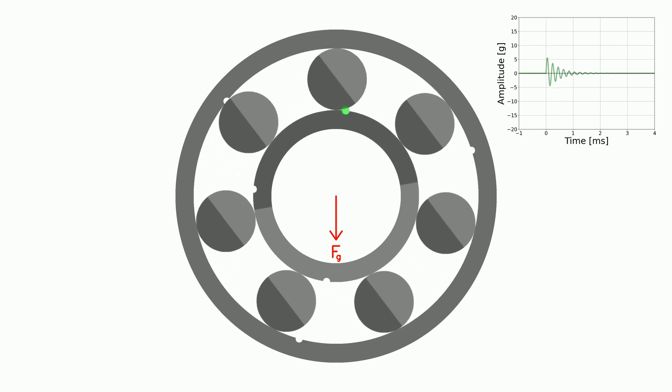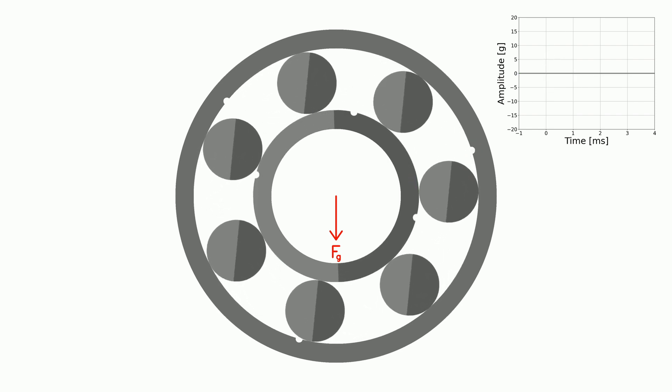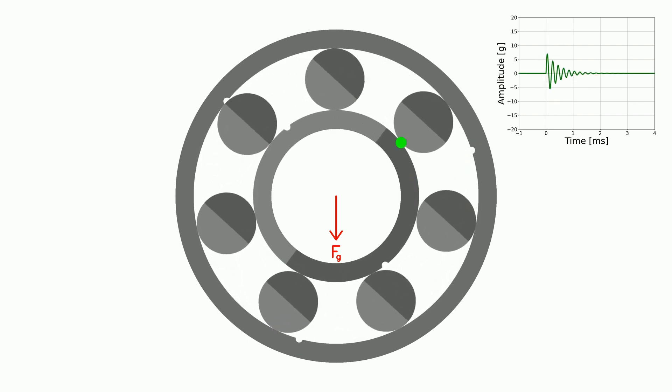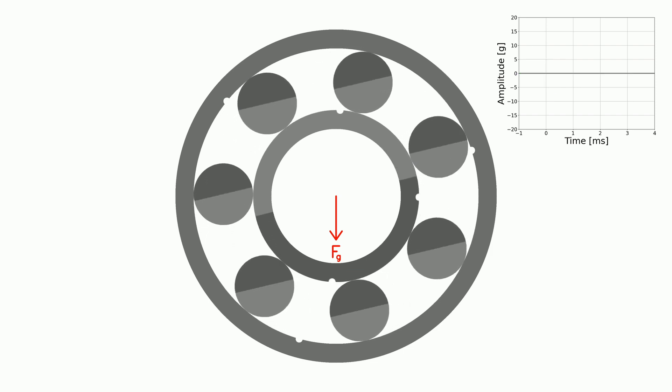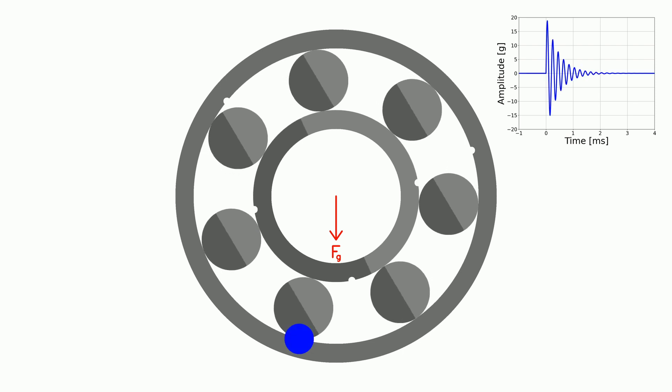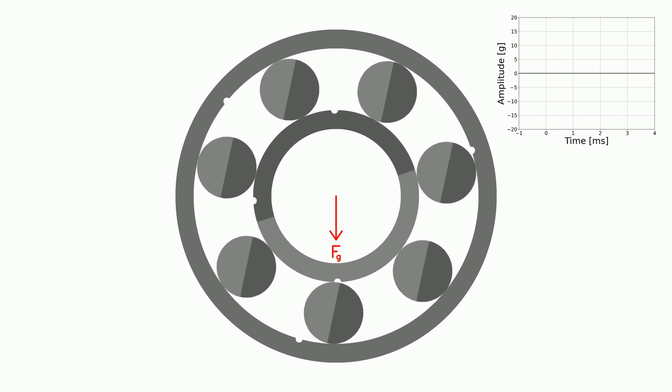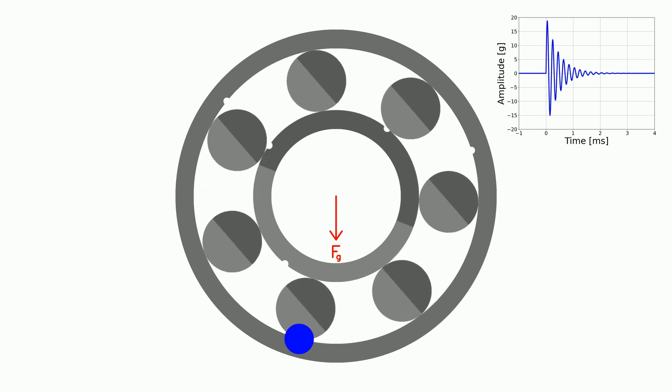This is true for both races. In this case, only inner race shocks are modulated. The outer race shocks are not modulated. It is because the position of each outer race fault relative to Fg is constant.